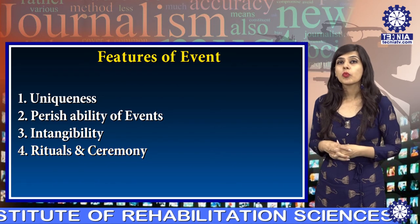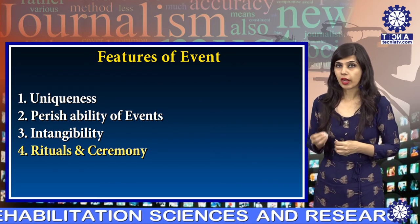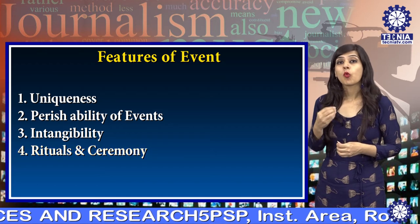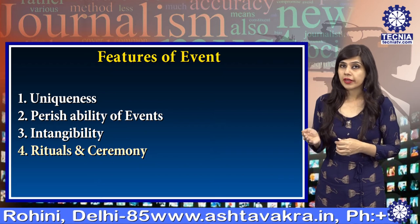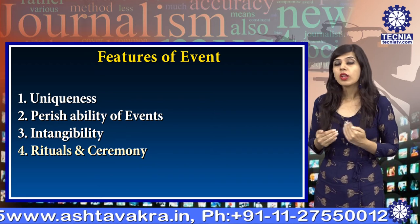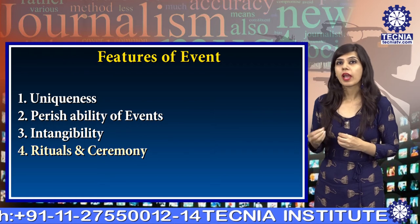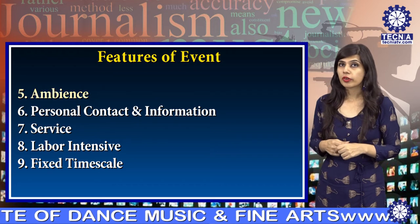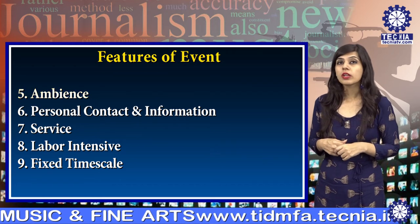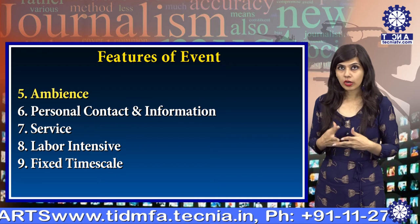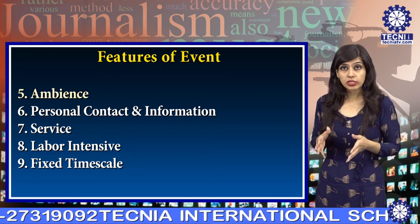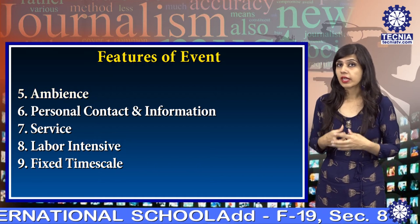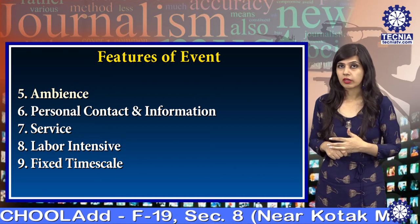The fourth feature is that events are based on rituals and ceremony — we follow a minute-to-minute program or schedule to organize an event, deciding what will happen first, what will happen after that, and what will happen at the end. The fifth feature is ambience — the location of the event is most important because if the location is good, only then can we attract our target audience.